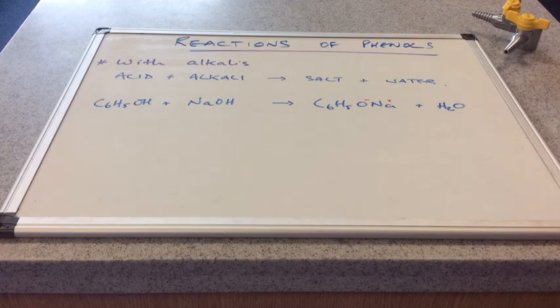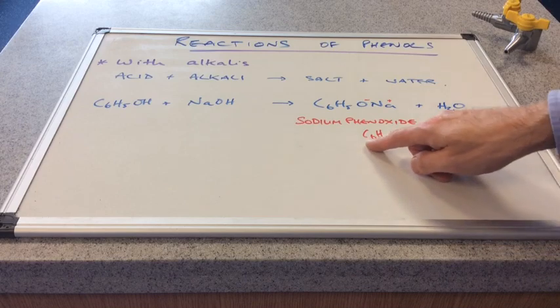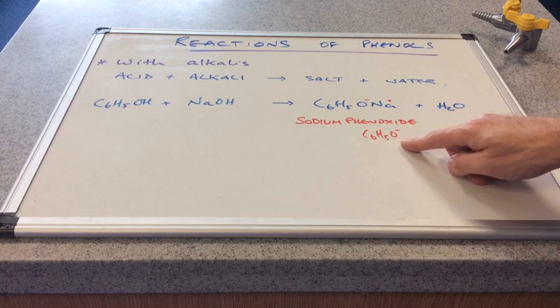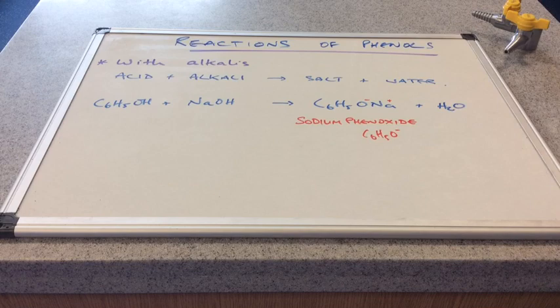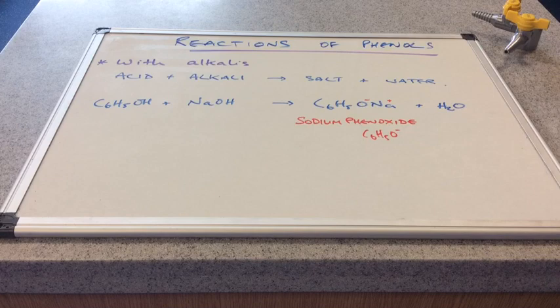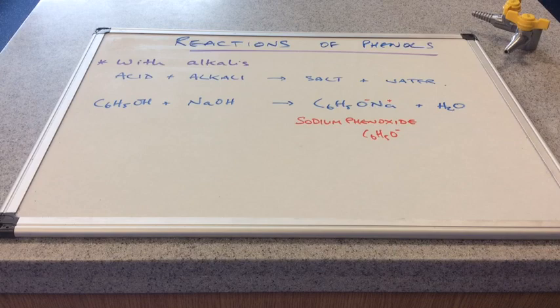So what's it called? We'll write it up now. So it's called sodium phenoxide. And the phenoxide ion I've written up here, C6H5O-. And notice that's a 1- charged ion. So if you were reacting that with a different alkali, let's say a group 2 alkali, then you'd have to be a bit more careful with the formula of your salt. So I'm sure you'll be asked questions about that. I'm not going to show it on the video. I don't want to tell you all of the answers.